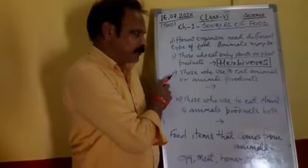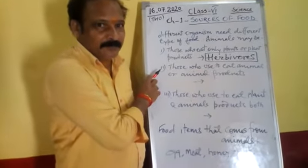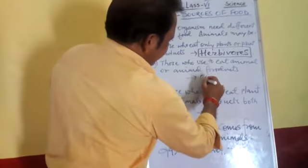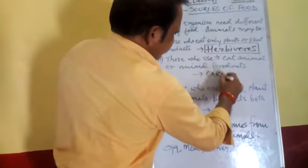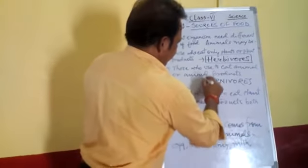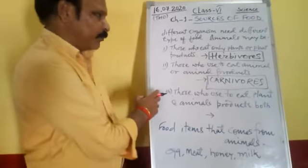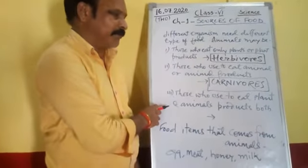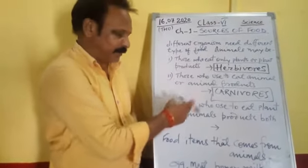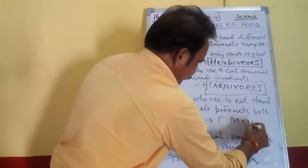The second type: those organisms who eat either animals or animal products. Such animals are known as carnivores. And the third type of animals are those who eat both plant and animal products. They are known as omnivores.